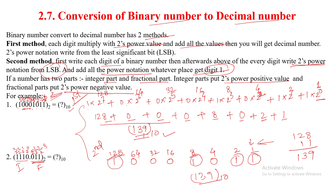Why do we start with 2's power minus 1 for the fractional part? Because moving to the right of 0 gives positive power values, and moving to the left of 0 gives negative values. So minus 1 is the first negative value, and that is why we start from minus 1. You can now calculate this example yourself. Thank you very much for watching this video.